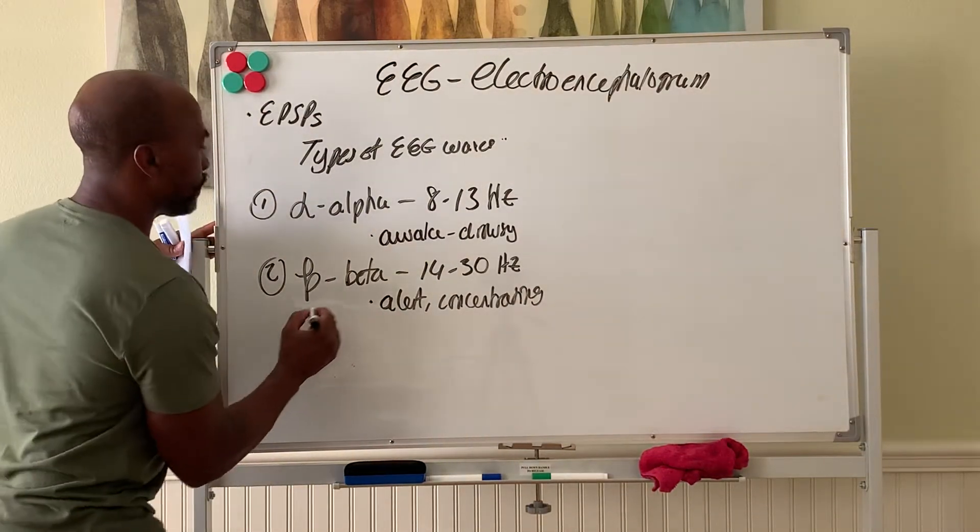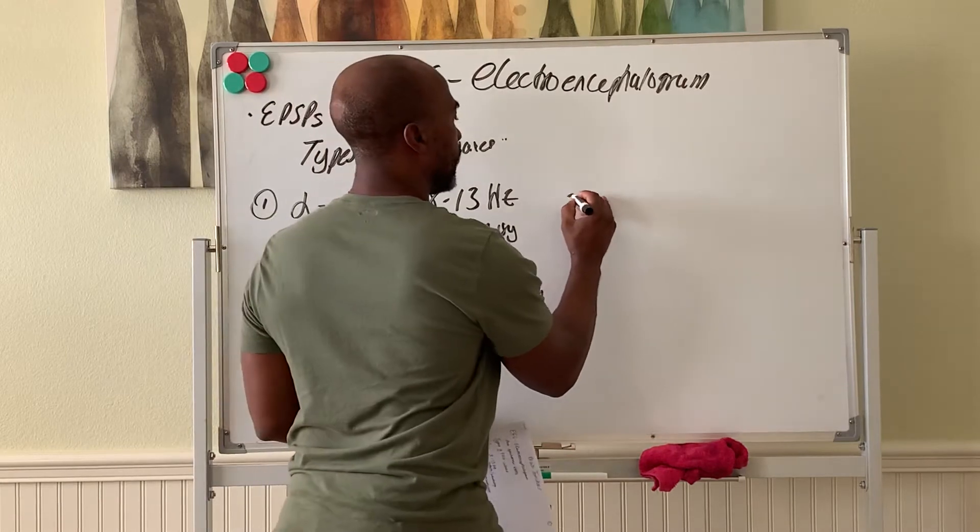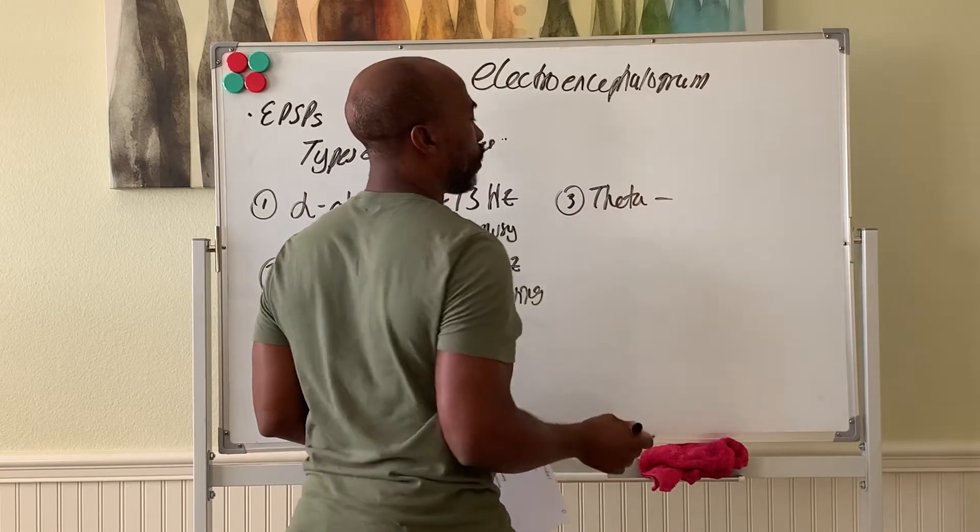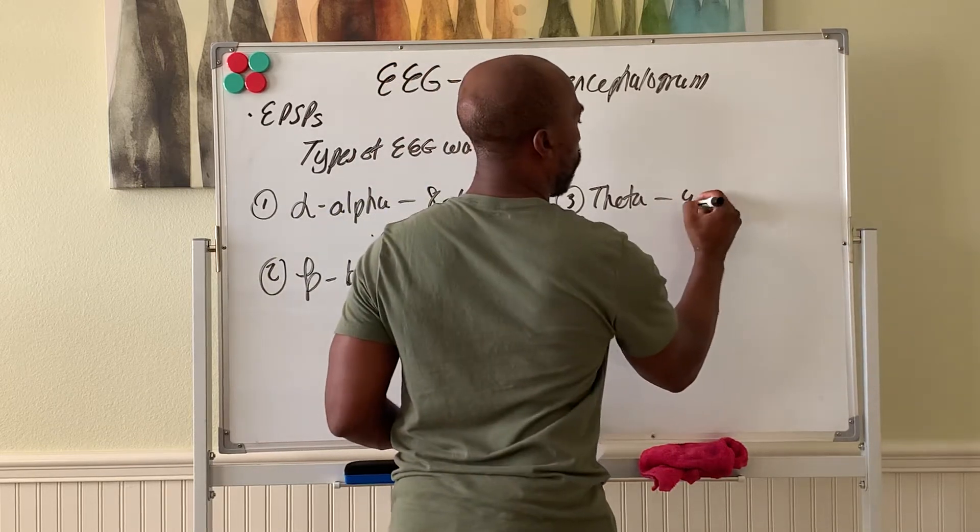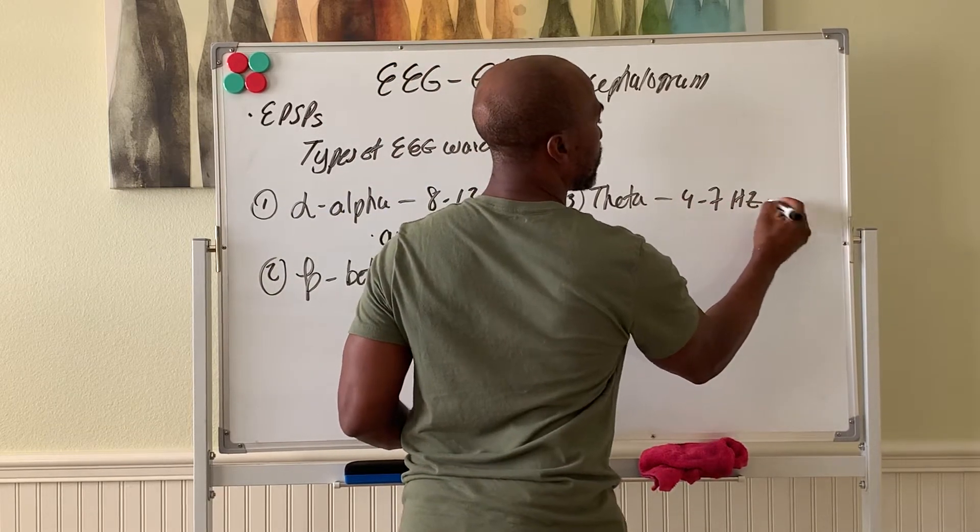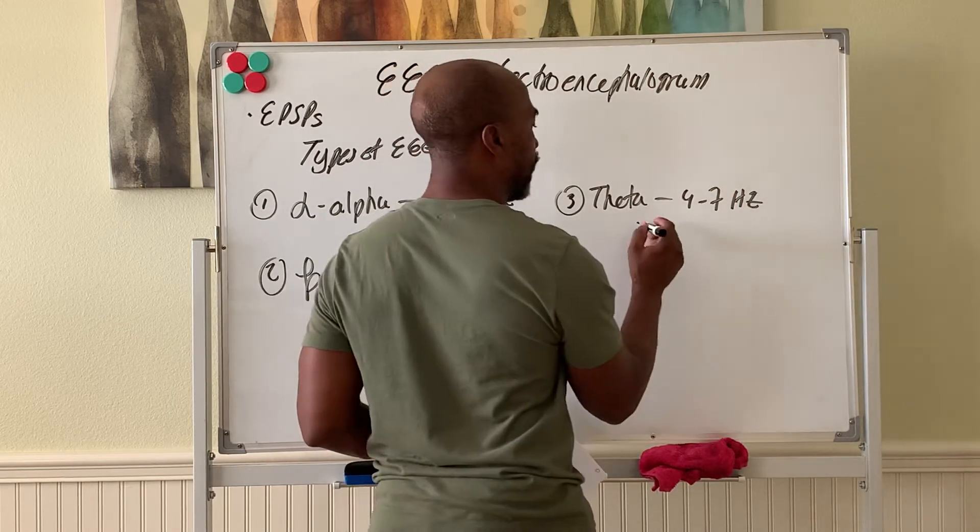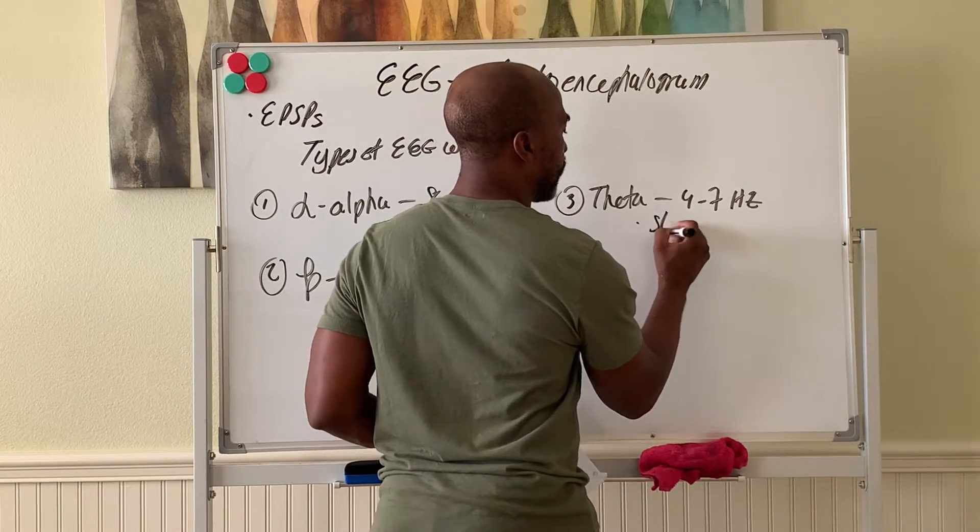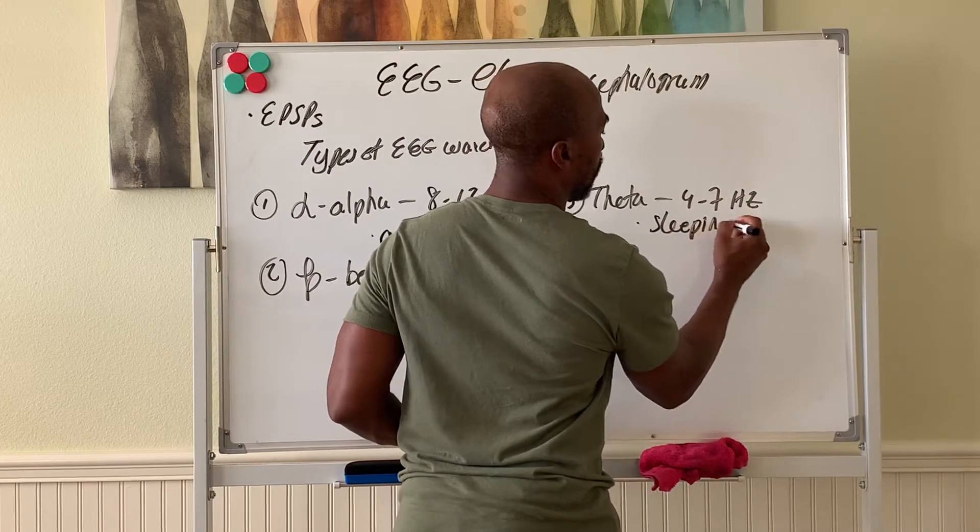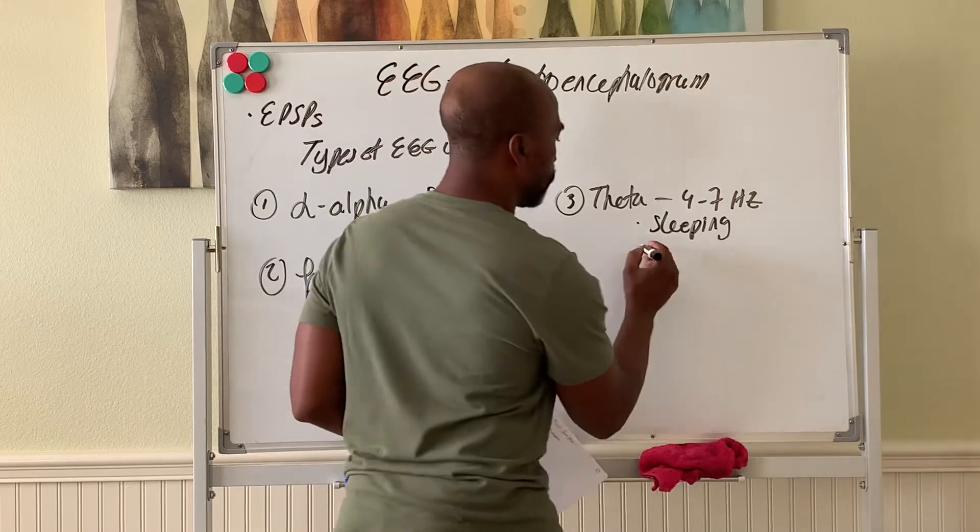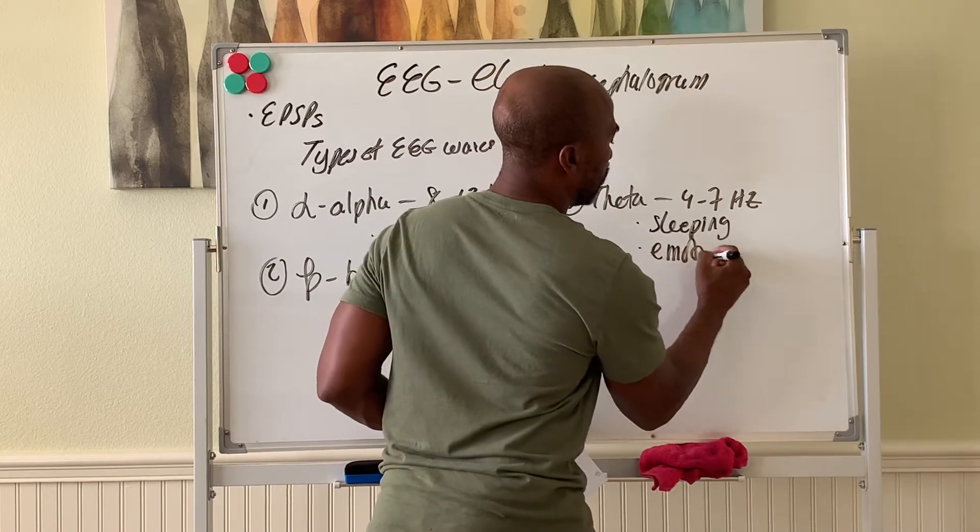The third wave is your theta wave. Theta waves are around 4 to 7 hertz. They normally show up during sleep around stage 3 sleep, so sleeping adults will show theta waves. They may also show up during emotional distress.